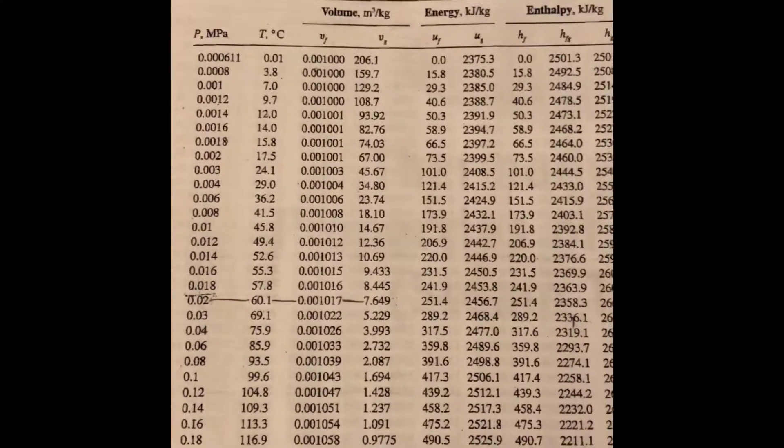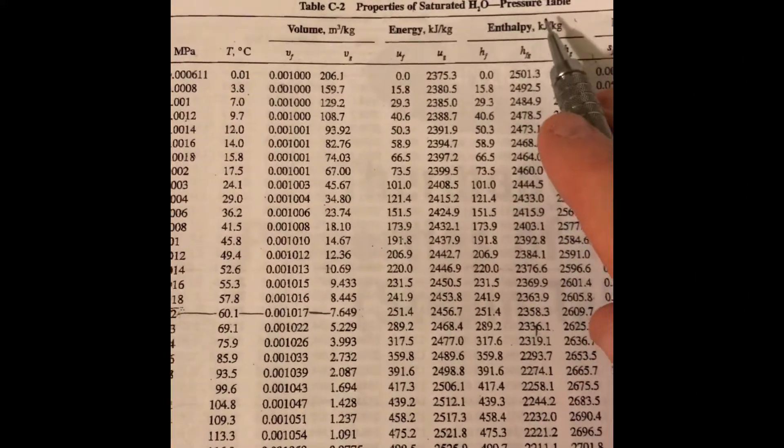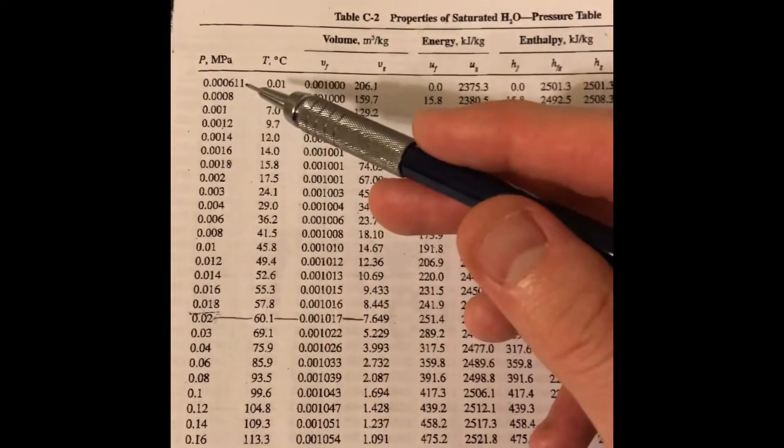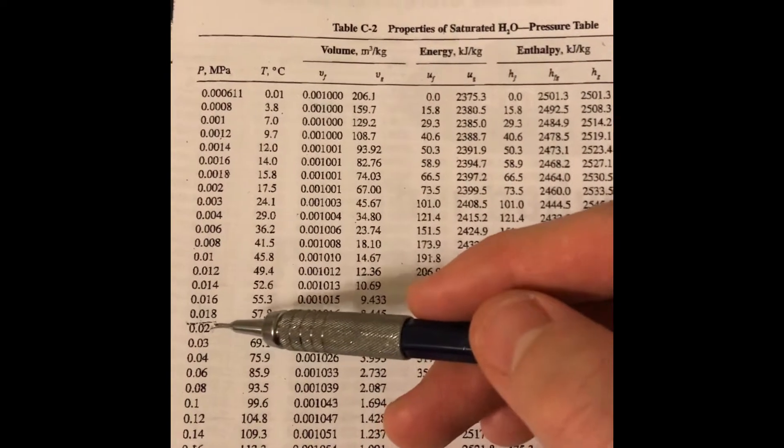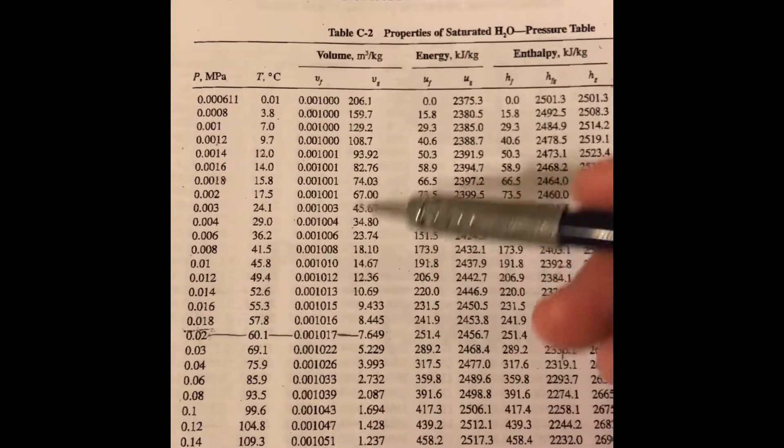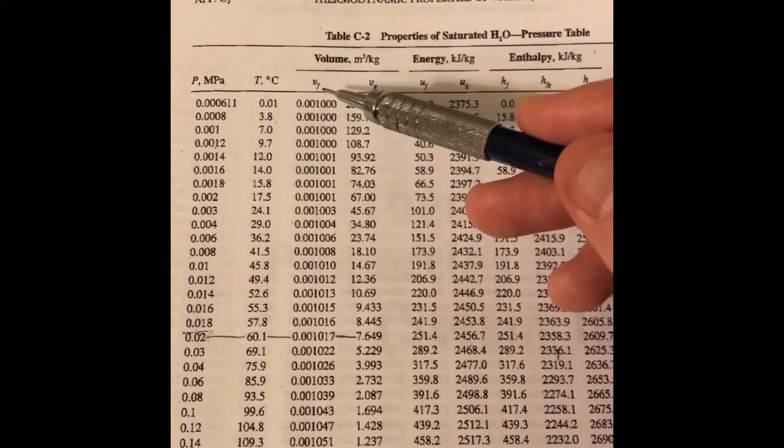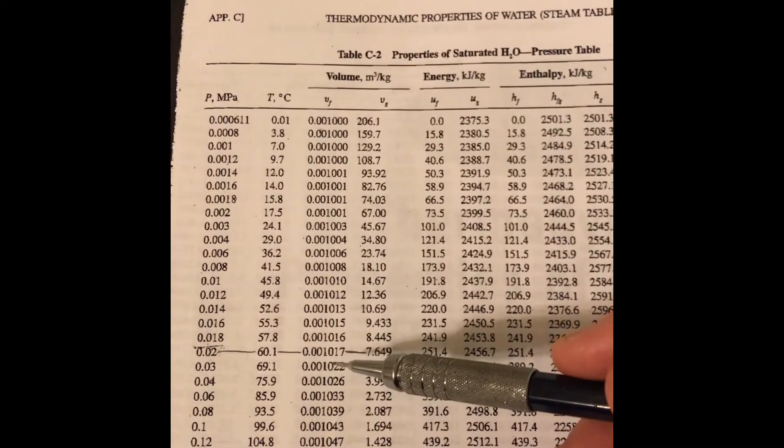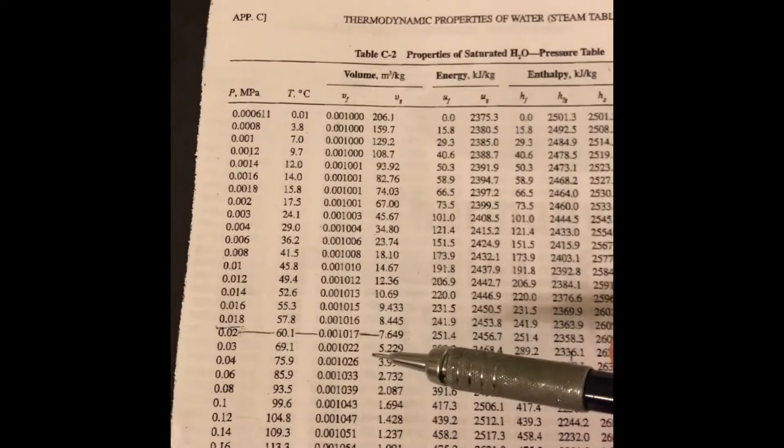Now looking at your steam tables, the first thing you need to do is you need to locate the pressure table. Okay, now within the pressure table, first you find our pressure which is 0.02 MPa. Then after that you need to find the specific volume of the fluid, notated as little v sub f, which is 0.001017 meters cubed over kilograms.